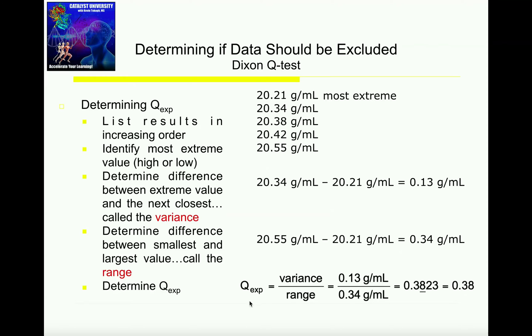To calculate Q experimental as before, I take the variance and divide by the range. The variance we calculated as 0.13, and the range is 0.34. Notice in this case, both of these have two significant digits, so my final Q experimental will only have two significant digits. Initially, if you punch this into calculator, you get 0.3823, but we can round this off to 0.38. So 0.38 is my Q experimental.